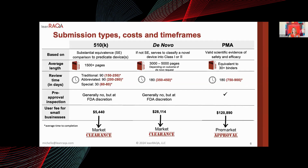In the EU, a successful 510k is built on substantial equivalence — a comparison to a predicate or already legally marketed device with an existing regulation and product code. Substantially equivalent doesn't mean identical; it means in terms of intended use and technology, it's similar enough that it's not raising new questions of safety and efficacy. If you can't make a substantially equivalent argument and don't fall into an existing regulation, you are new and novel but moderate risk, so you go through the de novo process. In terms of length, you're ranging from 500 to 1,500 pages for a 510k and around 4,000 pages for a de novo.